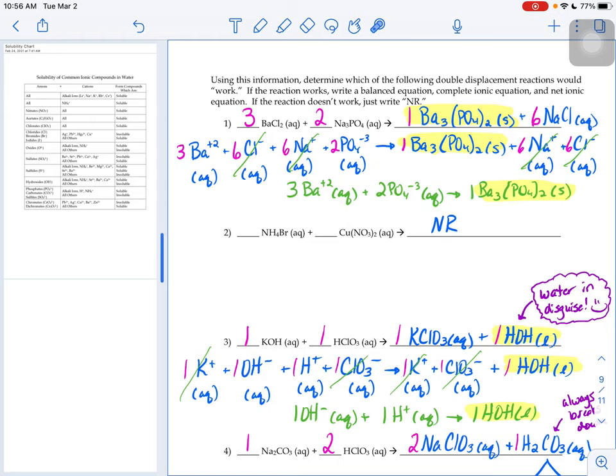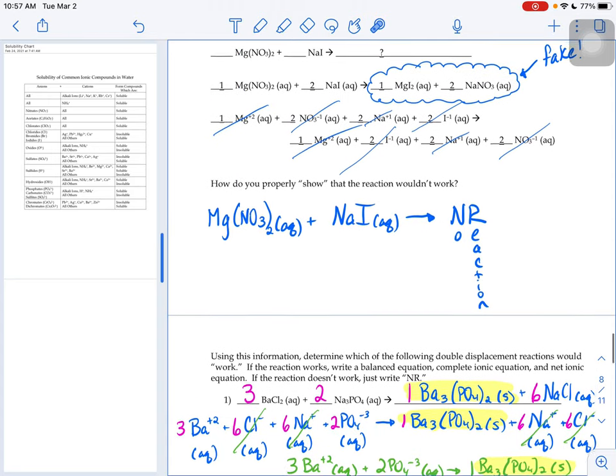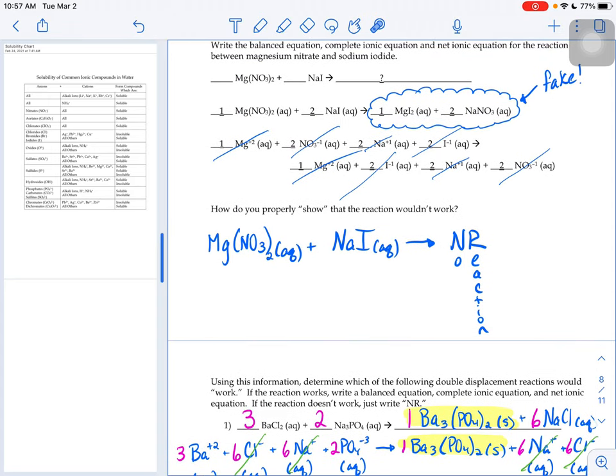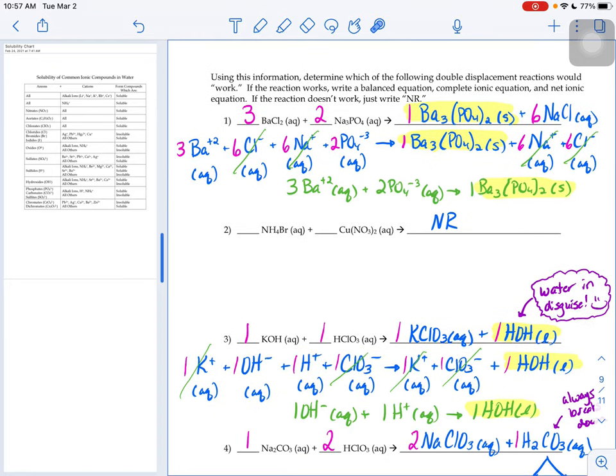So because we'd have both of our products be aqueous, it would look like a situation like we did in class the other day. That ammonium nitrate and copper two bromide products are fake. We never actually make them because when you get the situation where both reactants and both products are aqueous, when you do your complete and your net ionic equation, everything would cancel out. No reaction for number two.